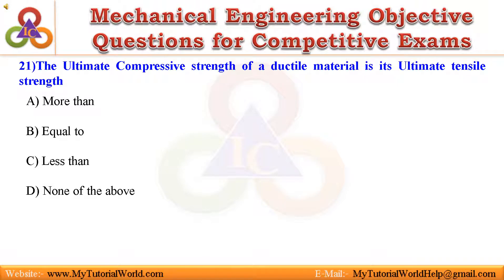Question 21. The ultimate compressive strength of a ductile material is its ultimate tensile strength. A. More than. B. Equal to. C. Less than. D. None of the above. Answer is: Less than.